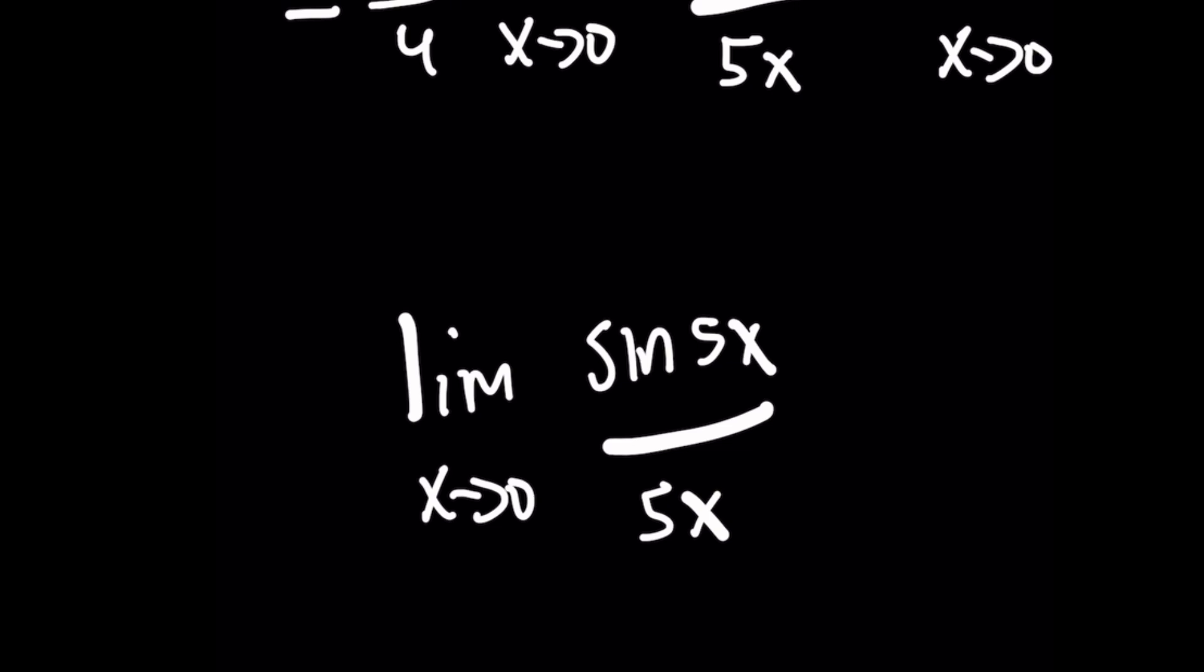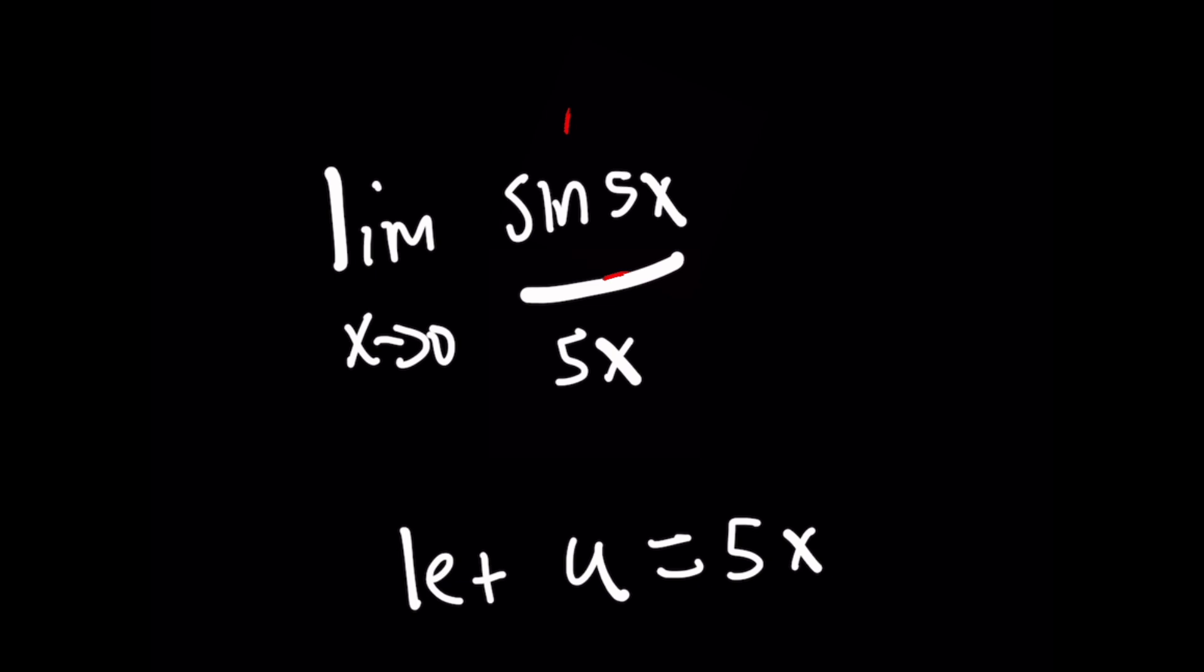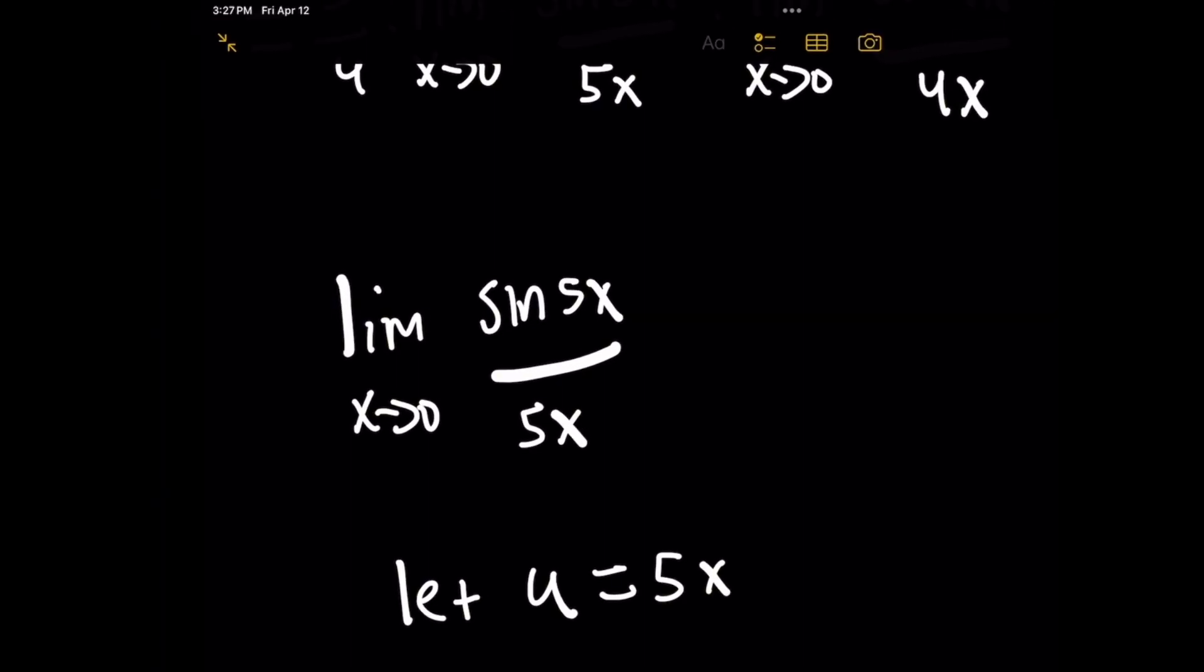Okay, we can do a u substitution. I'm going to let u just simply be this 5x term. But we have to also remember, okay, well, x was approaching 0 before, so what does u approach? Because we want to make sure that we don't change the value of convergence of the original limit. Well, it's pretty obvious, right? When x gets infinitesimally small to something extremely close to 0, u is going to do the same thing.